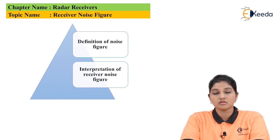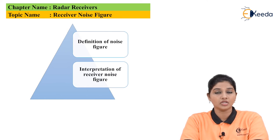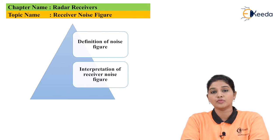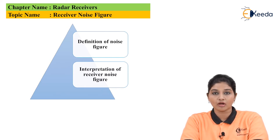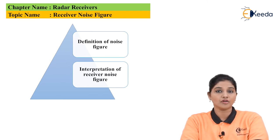In case of radar, the receiver noise figure is defined as the measure of actual power delivered to the actual load, or it gives a measure between the noise power output to the actual load compared with the noise power output of the ideal load, and it is given by a formula.